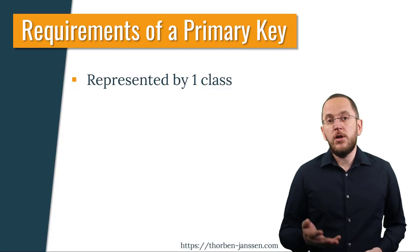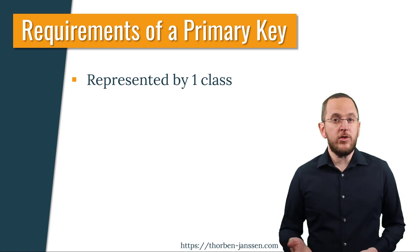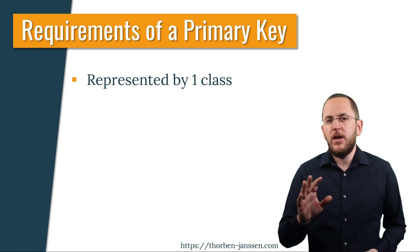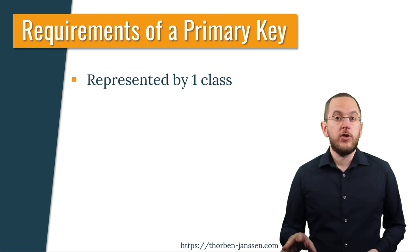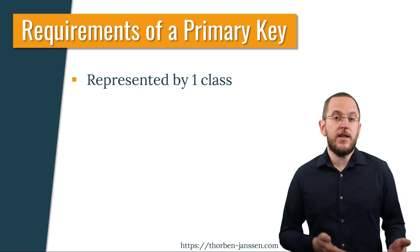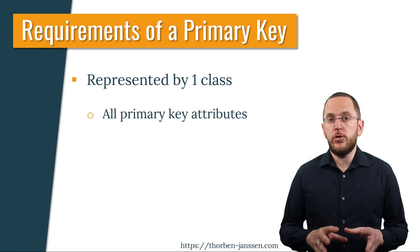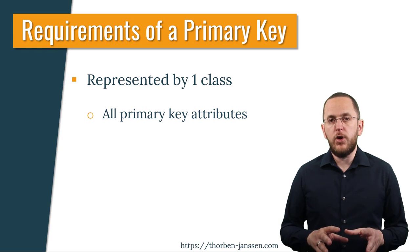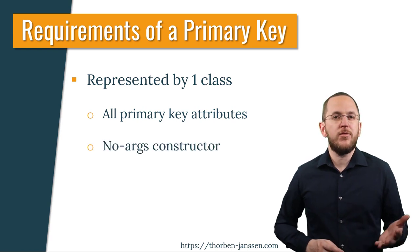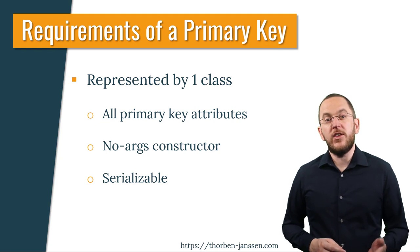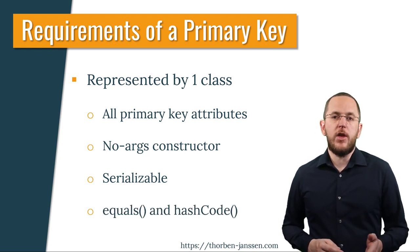If you want to model a JPA entity that uses a composite primary key, you need to provide one class representing this key. Your persistence provider and cache implementation use objects of this class internally to identify an entity object. The class has to model all attributes that are part of the primary key, and it also needs to have a no-args constructor and implement the serializable interface and the equals and hashCode methods.